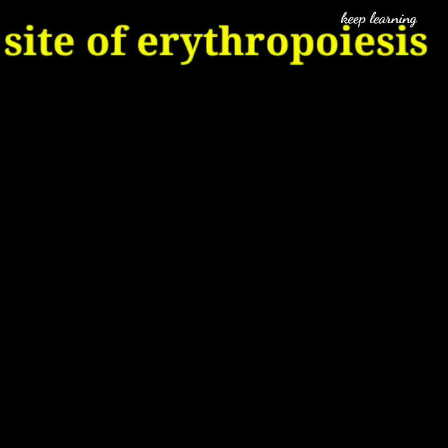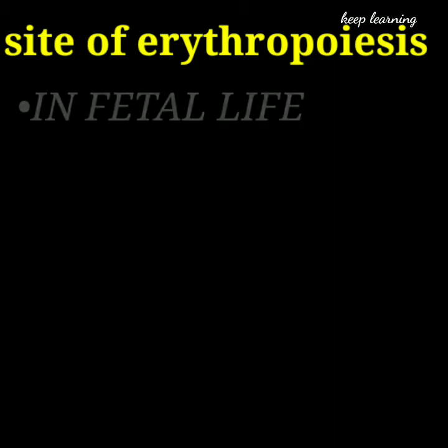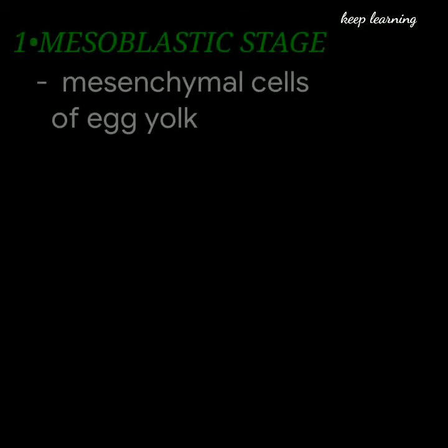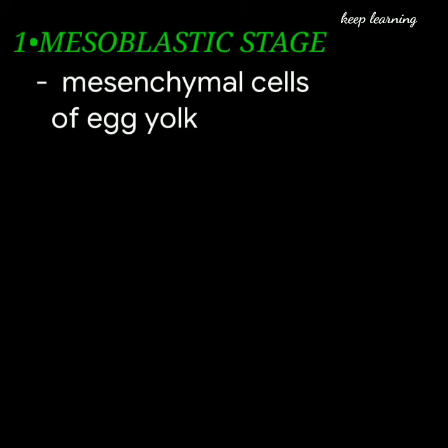Site of erythropoiesis: in which organ erythropoiesis occurs. In fetal life, that is in the intrauterine life, erythropoiesis occurs in different sites in different periods. During the first trimester it is the mesoblastic stage, where RBCs are produced from mesenchymal cells of the egg yolk.